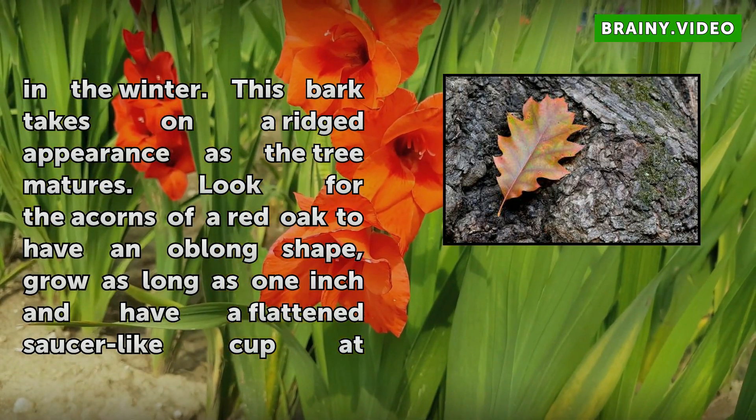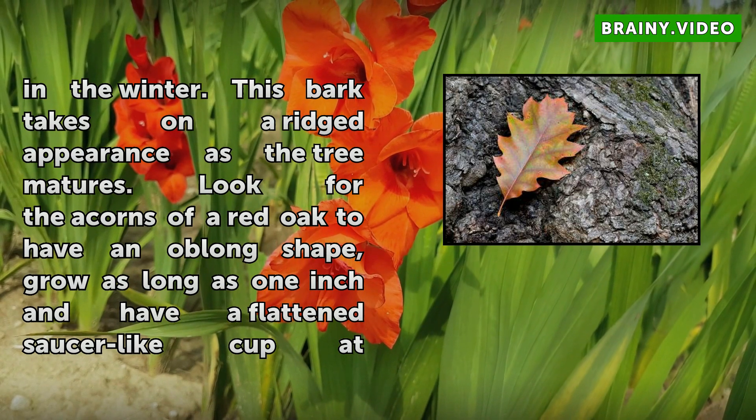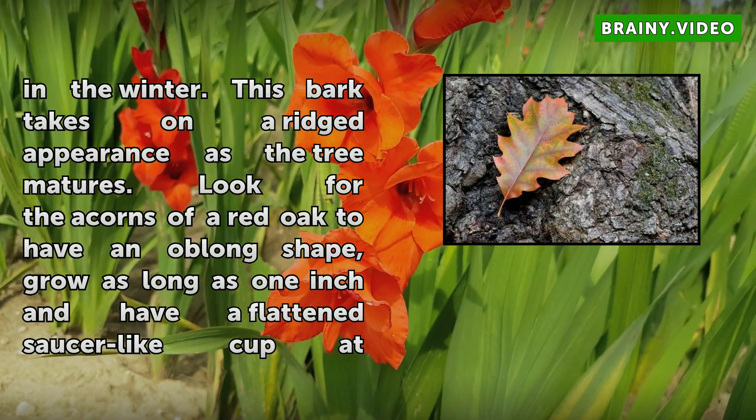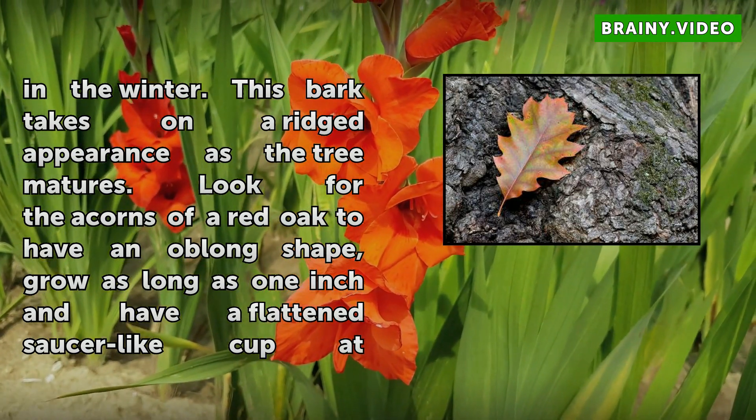Look for the acorns of a red oak to have an oblong shape, grow as long as 1 inch, and have a flattened saucer-like cup at the base.